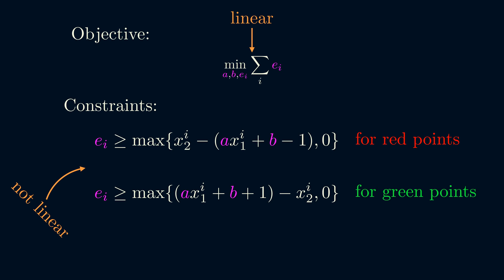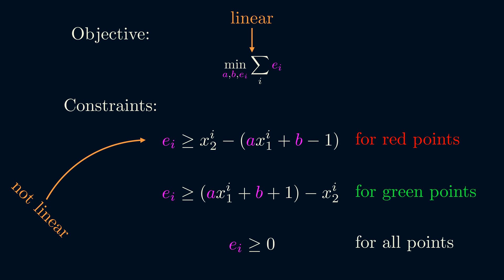Now, if ei is at least the max of two separate terms, it's greater than or equal to each term individually. This final form is a linear program.